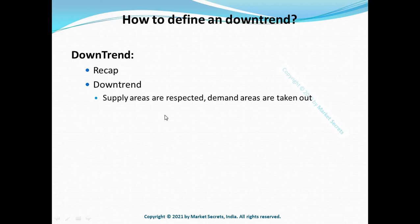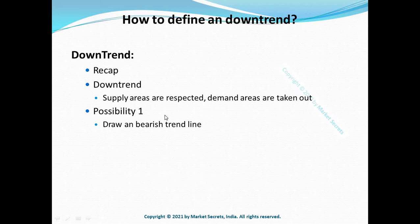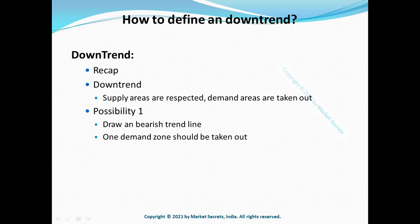We can define a downtrend in two possibilities. Possibility one: we were able to draw a downtrend or bearish trend line which is respected, and at least one opposing demand zone is taken out. So every time there is a demand zone being removed and two new peaks are formed, the downtrend is established and has officially begun.